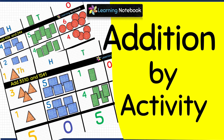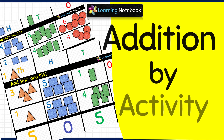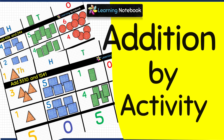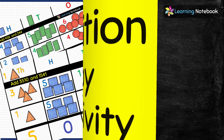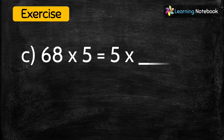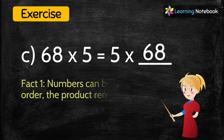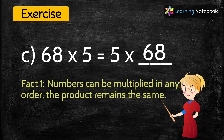We have a very interesting activity to learn addition in a fun way — the link is here on the top and in the description box. Now part C: 68 multiplied by 5 equals 5 multiplied by blank. The answer is 68, because fact number 1 states that numbers can be multiplied in any order and their product remains the same.